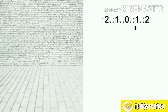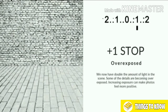Let's see what happens if we add one stop of light to the scene. We're now one stop overexposed — double the amount of light is coming in, and details are becoming a little bit overexposed. We haven't lost any details yet, but it's looking a little bit brighter. Increasing exposure can make photographs feel more positive, and we use brighter exposures for what we call high-key photography — where we want everything to look nice and bright, airy, and happy. There are creative decisions to take into consideration when adjusting exposure.